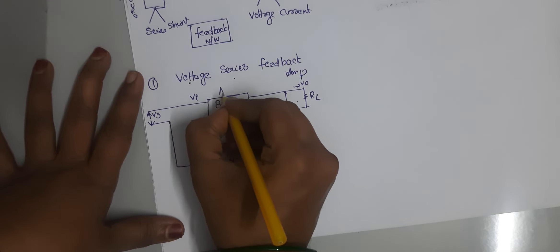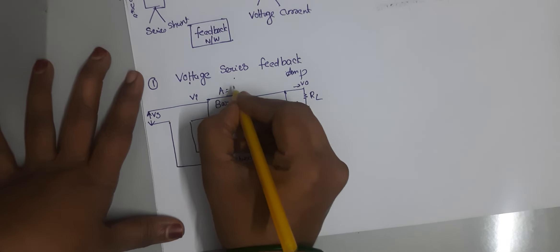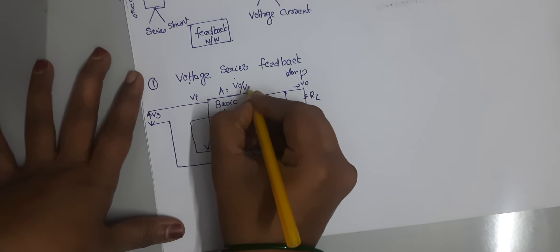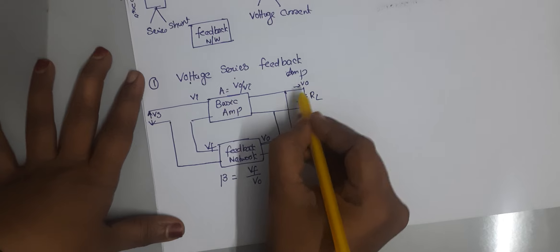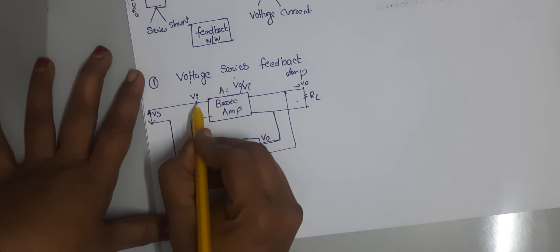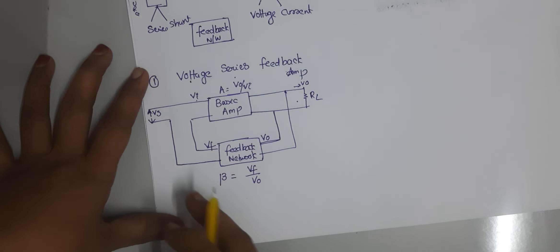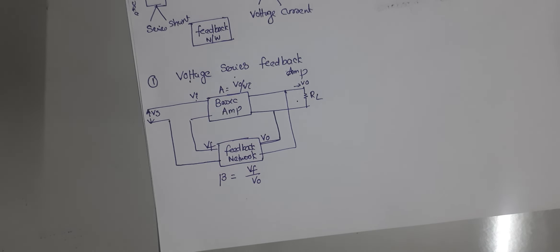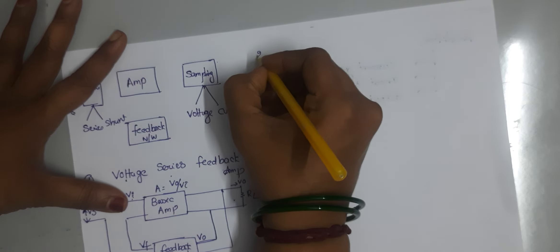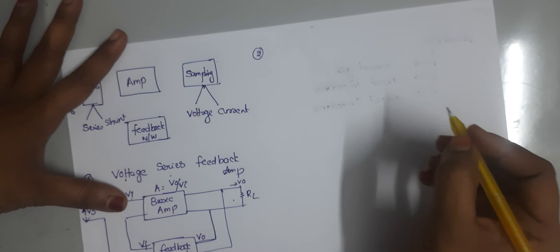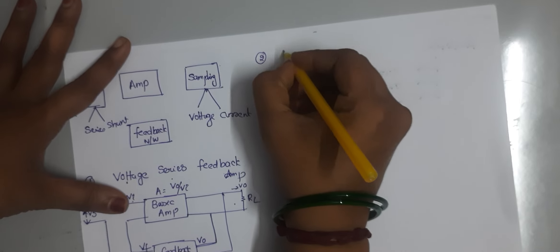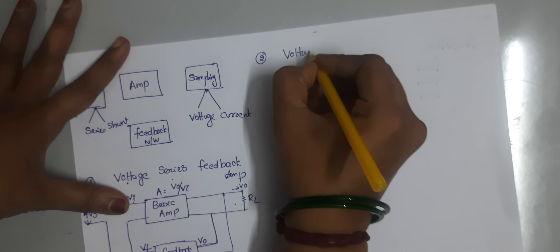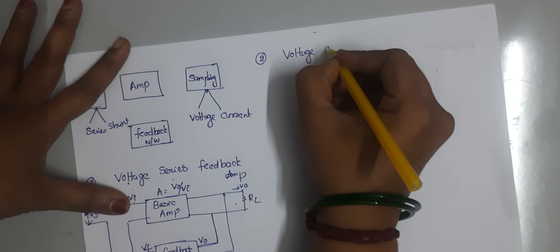Here A is equal to V0 divided by Vi. So this is the voltage series feedback amplifier. The second topology is the voltage shunt feedback amplifier.